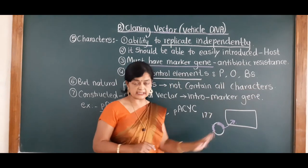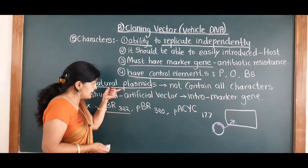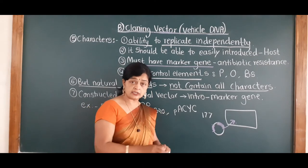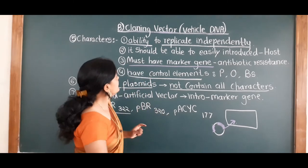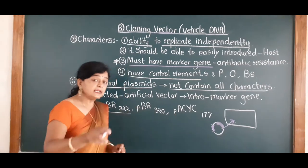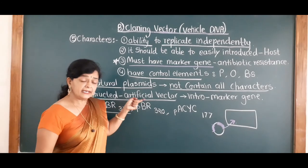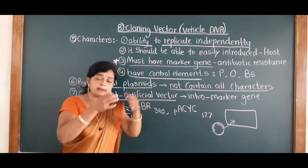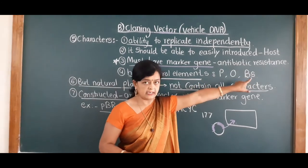But what was the problem? Natural plasmids are there, but these natural plasmids do not contain all types of characters — one or the other character is missing. Scientists generally found that the presence of a marker gene is not there in the natural plasmid. So what they did — they constructed artificial vectors. They prepared an artificial plasmid by introducing the marker gene which provides antibiotic resistance.